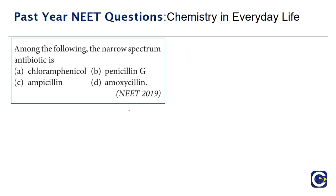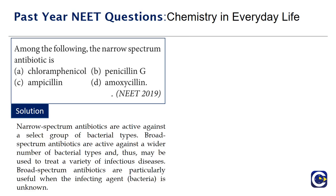This question came in NEET 2019: among the following, which is the narrow spectrum antibiotic? All four options are antibiotics — amoxicillin, ampicillin, Penicillin G, and chloramphenicol. There are two types of antibiotics: narrow spectrum antibiotics, which are active against a select group of bacterial types and used when the bacterial type is clear, and broad spectrum antibiotics, which are active against a wider number of bacterial types.